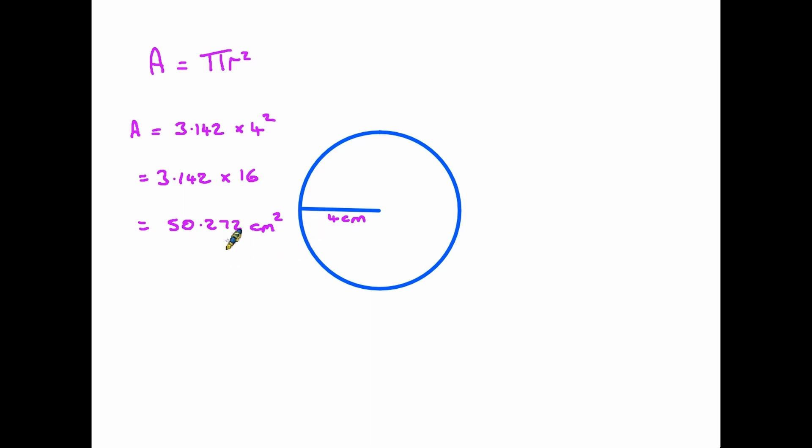It may well be in an exam question that you were asked to give this to the nearest centimeter, or one or two decimal places. Just for this example, I'm going to give it to the nearest centimeter, so 50 centimeters squared. It is important to read the question to make sure you are giving your answer to the required level of accuracy.